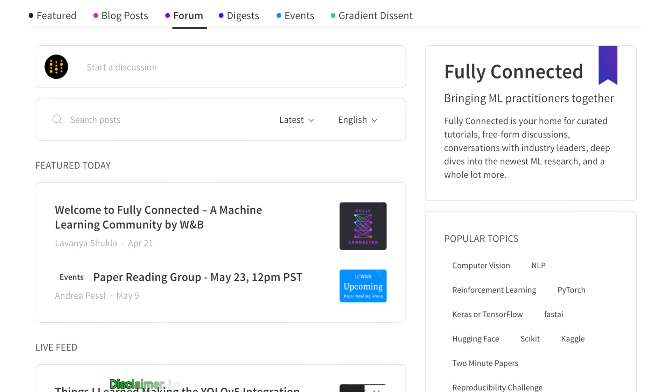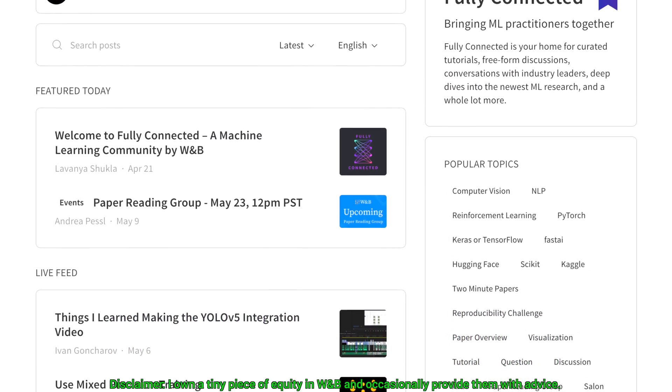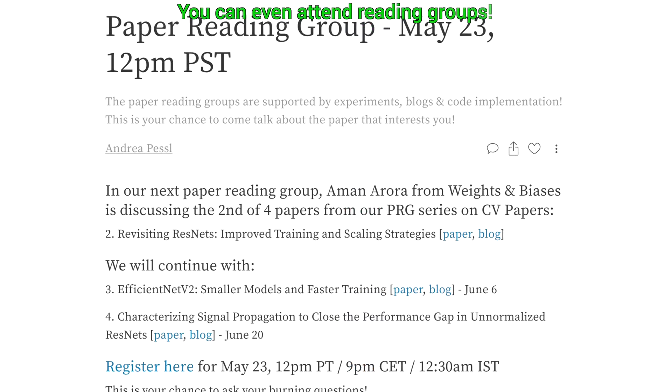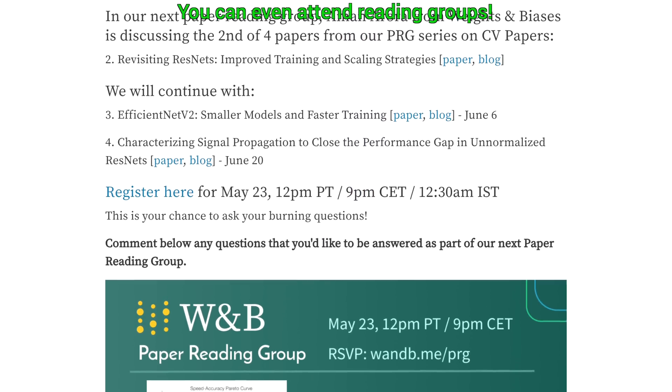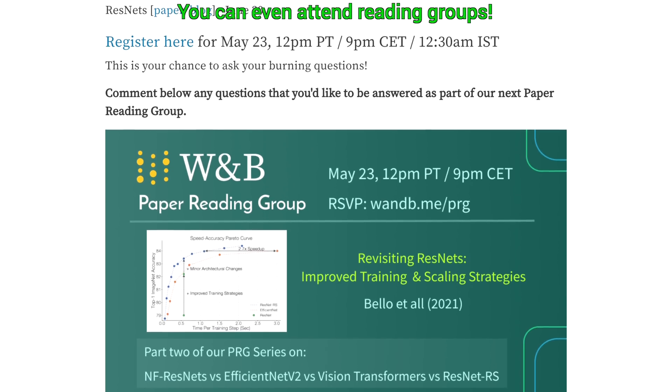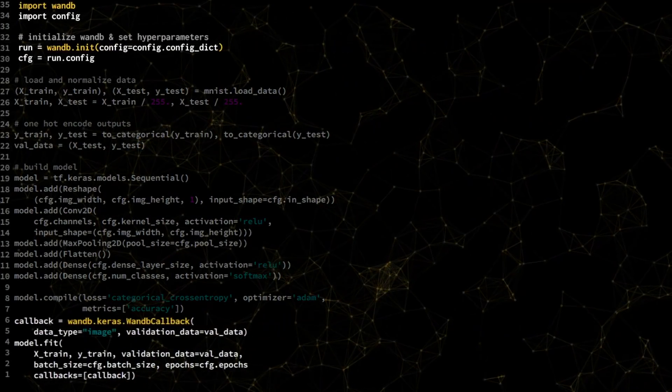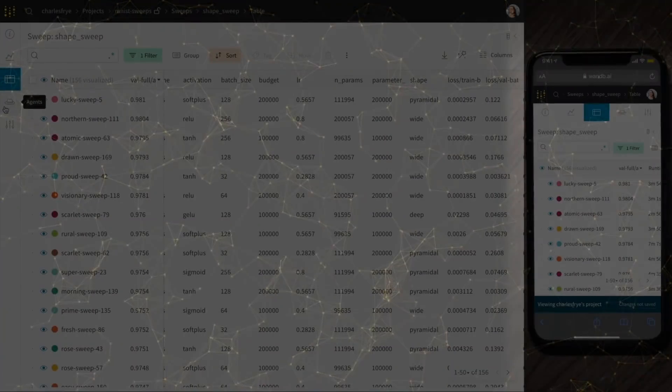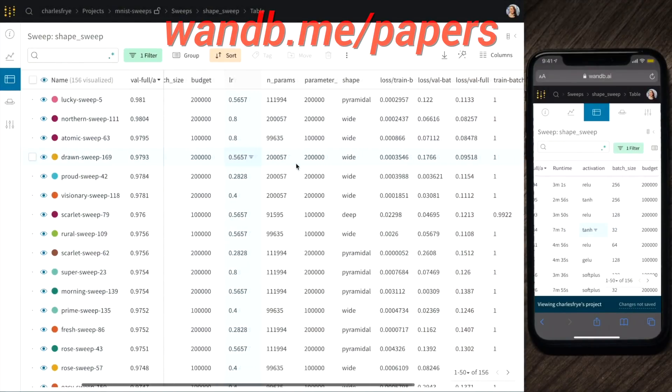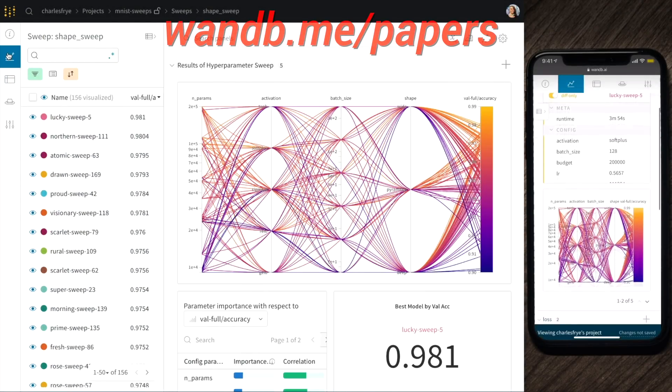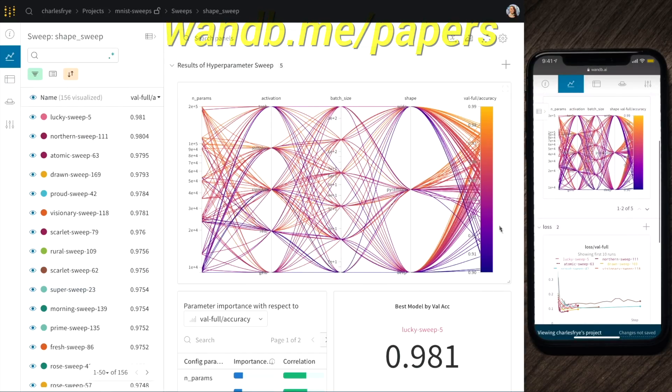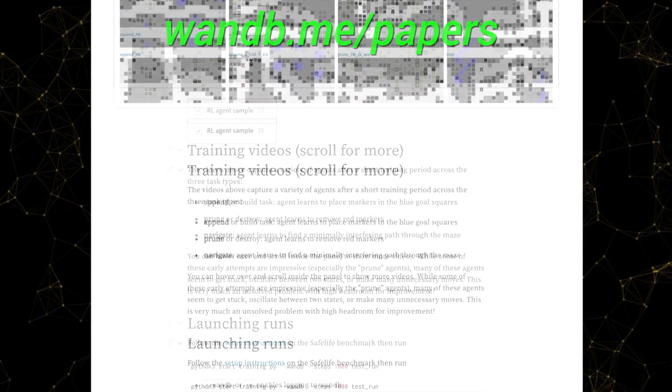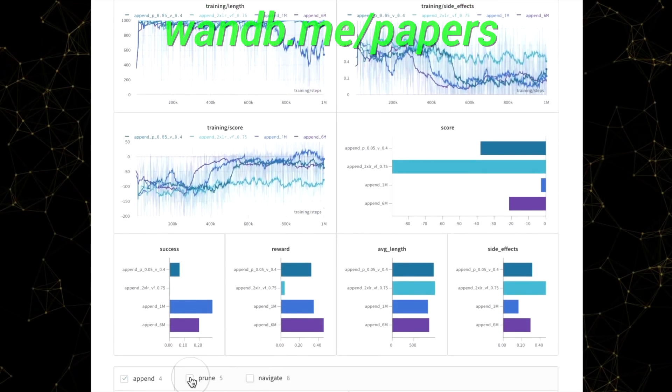This video has been supported by Weights and Biases. Check out their recent offering Fully Connected, a place where they bring machine learning practitioners together to share and discuss their ideas, learn from industry leaders, and even collaborate on projects together. You see, I get messages from you fellow scholars telling me that you have been inspired by the series, but don't really know where to start. And here it is! Fully Connected is a great way to learn about the fundamentals, how to reproduce experiments, get your papers accepted to a conference, and more. Make sure to visit them through wnb.me slash papers or just click the link in the video description. Our thanks to Weights and Biases for their longstanding support and for helping us make better videos for you.